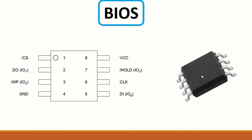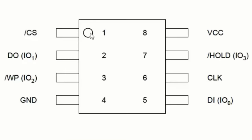Then we have the BIOS - the Basic Input Output System. This is an IC with a very important purpose in every motherboard: without it, the motherboard cannot power up or boot up. The BIOS contains the POST program - Power On Self Test. Pin 1 is connected to the CS signal, with data output, write protect, and ground.